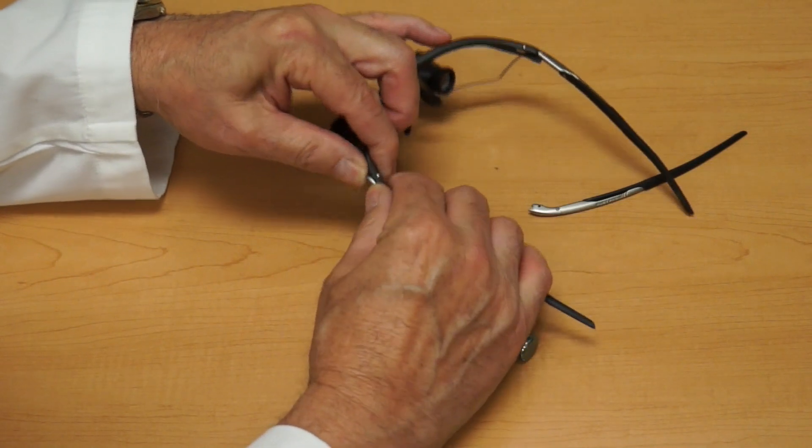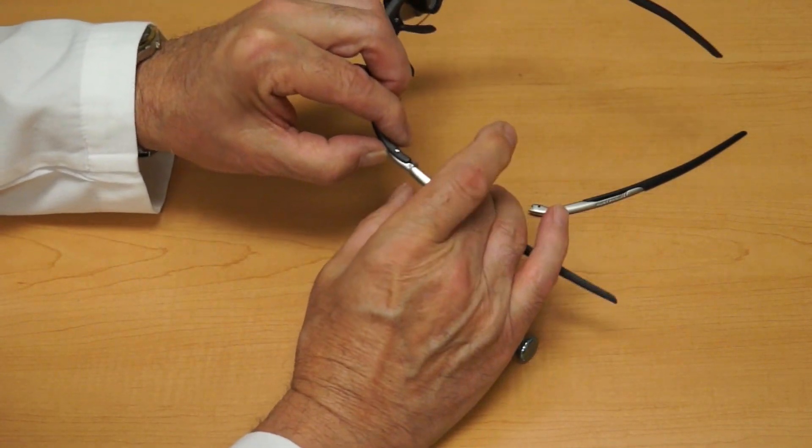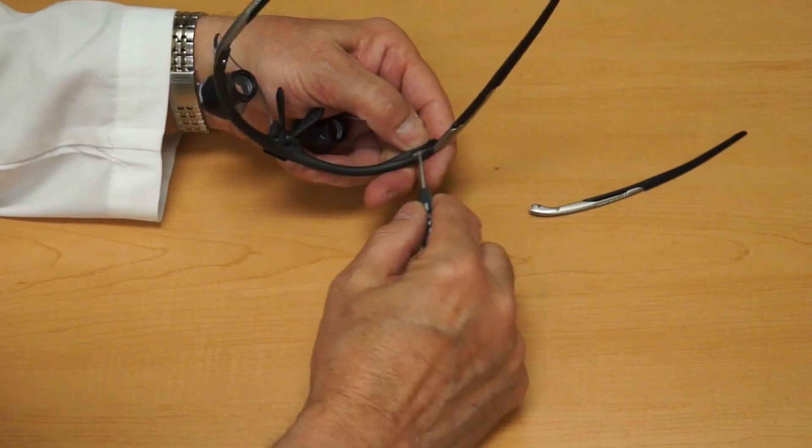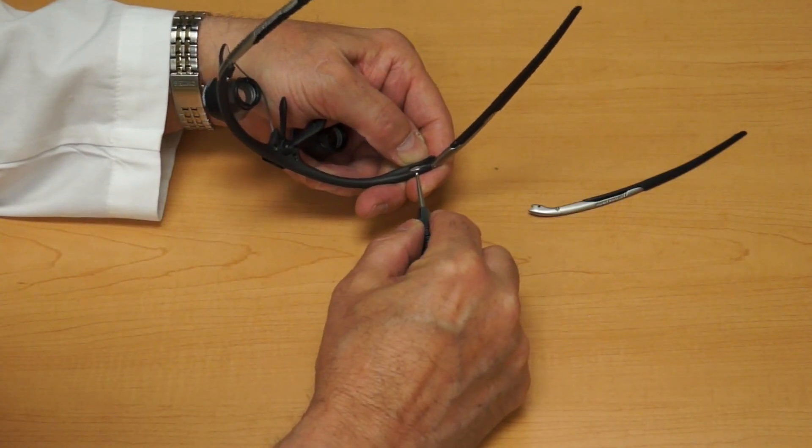Flipping it over, snap the hinge into place and finish by tightening up the screw.